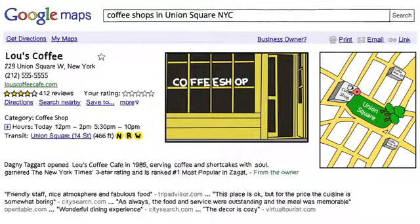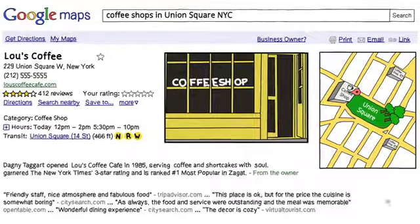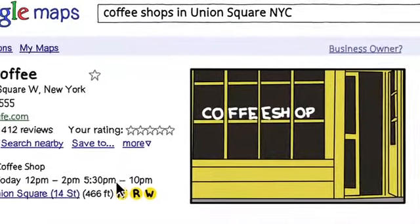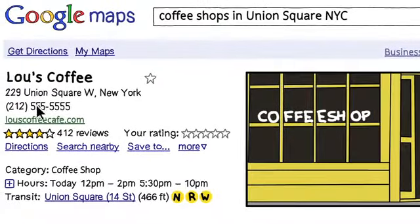Business owners can benefit from the millions of people looking for local information on Google. Every business has a Google Place page, and by claiming it in Google Places, a business can update photos, hours of operation, address, phone number, and other important information.